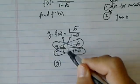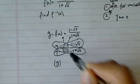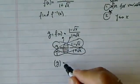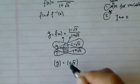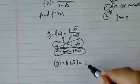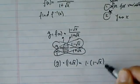Okay, so y times (1 + √x) is equal to 1 times (1 - √x).